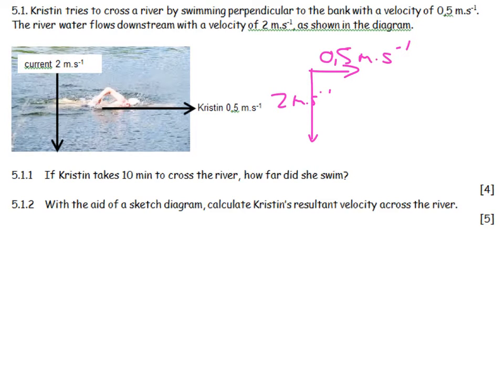Kristen takes 10 minutes to cross the river. We've got her speed. We don't need to worry about the current speed. We're only interested, how far did she swim? So, distance. It's a constant velocity, so we're not interested in an equation of motion. We're simply going to say that distance is equal to velocity times time. I've been given the velocity. What is the time? 10 minutes, so I need to get that into seconds. 10 times 60. And I land up with 300 meters.